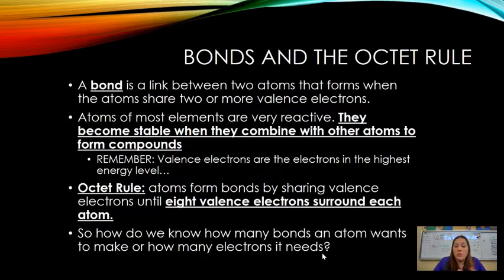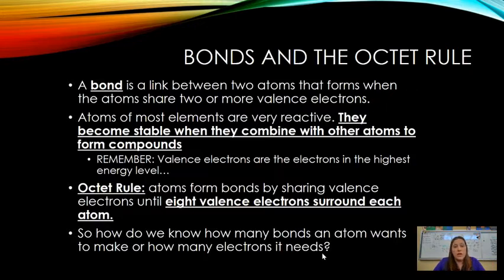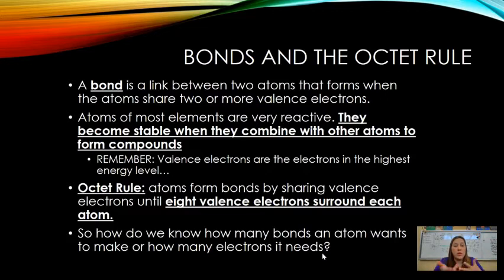Atoms of most elements are very reactive. A bond is going to be formed when an atom wants to change to become more stable. This goes along with all of your other science classes — one of our cross-cutting concepts is the idea that things that are not stable will change until they are stable. This is stability and change. An element is going to end up reacting with another element until it becomes more stable.